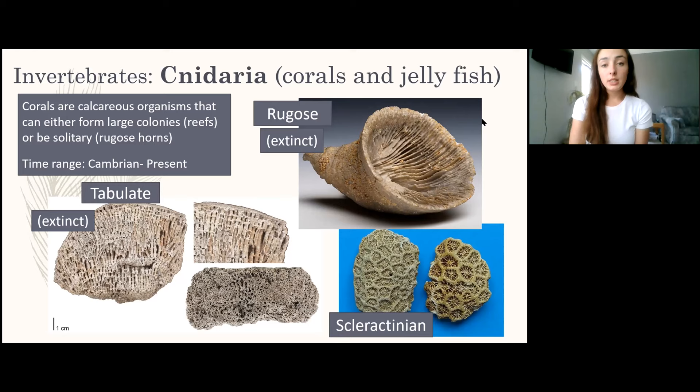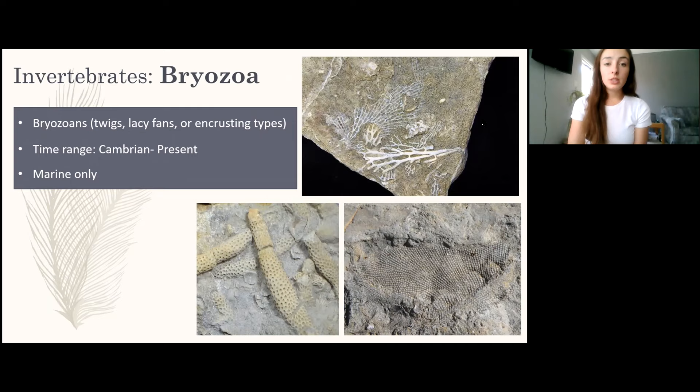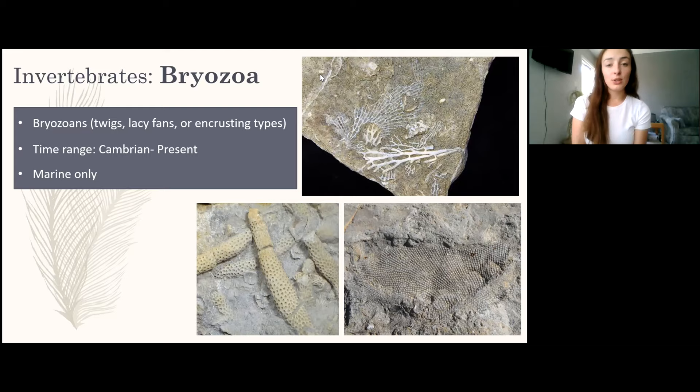The next invertebrate group is Bryozoa. Bryozoans have been around since the Cambrian and are still around today. They are all marine and look like lacy fans or twiggy structures in rocks, and are typically encrusting, meaning they live on other solid things — whether sediment, corals, or other animals.